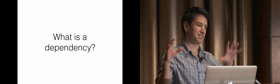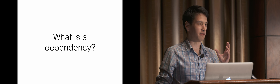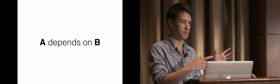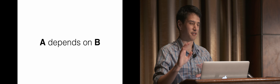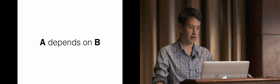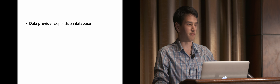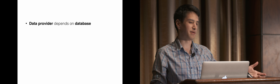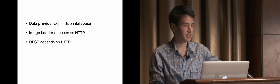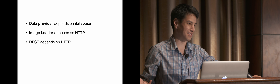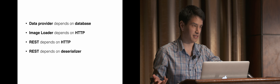Before we get into what dependency injection is, let's talk about what a dependency is. Very simply, it's when one component of your app depends on another component. This happens all over the place in programming - you'd have to create a trivially small program to have no dependencies. For example, you might have a data provider that depends on a database layer, an image loader that requires an HTTP layer, and REST calls that depend on HTTP.